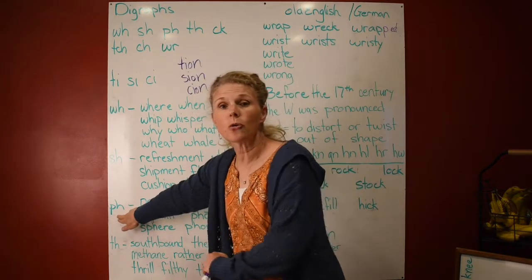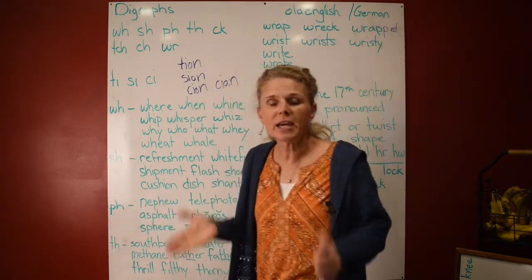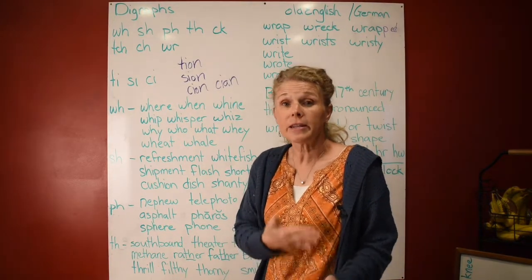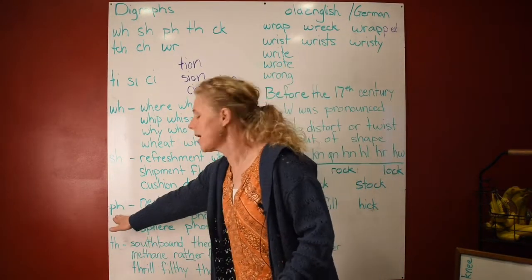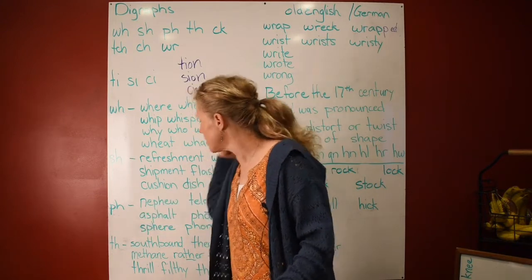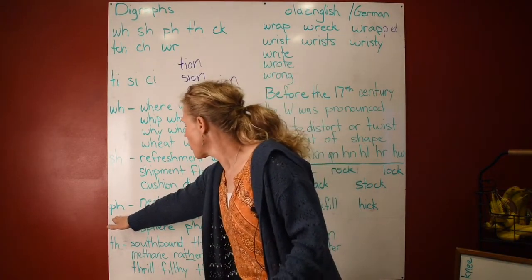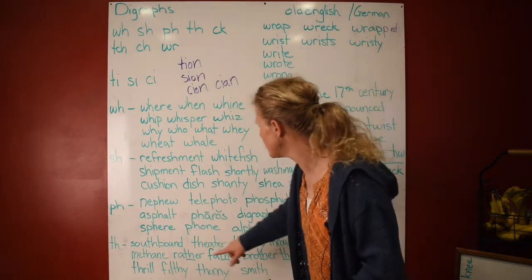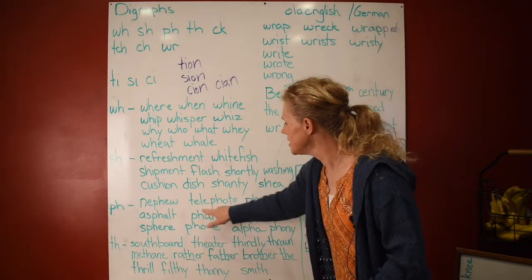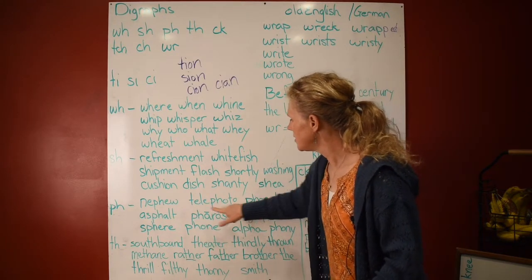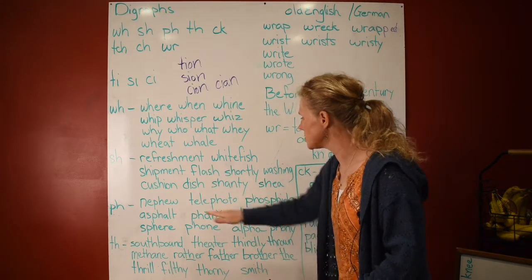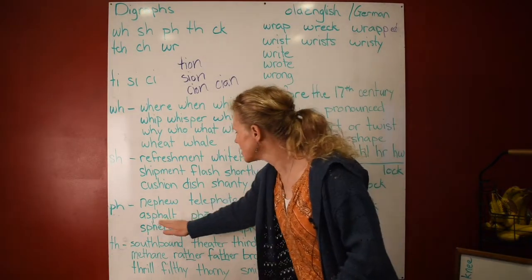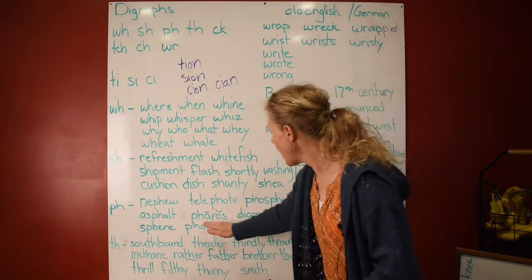I'll teach you more about reading Greek words in another part of the lesson. Now: nephew, telephoto. See — these are both Greek combining forms with different meanings. Phosphide. Asphalt. 'Pharos' — this could also say 'pharos'; it says both sounds. Digraph — what we have right here. Sphere — like a globe or the earth.